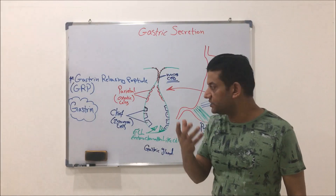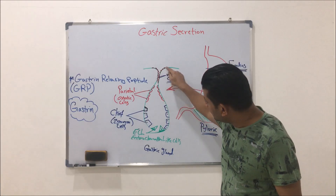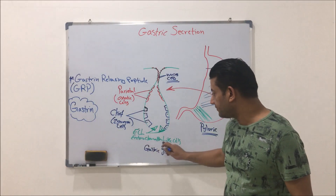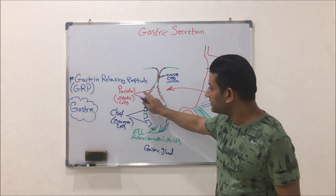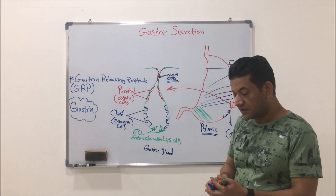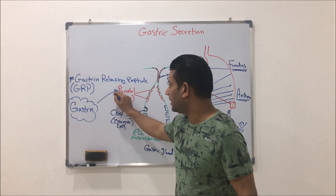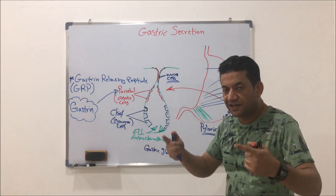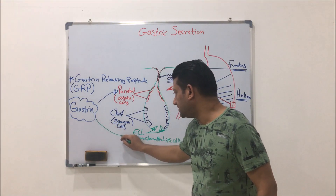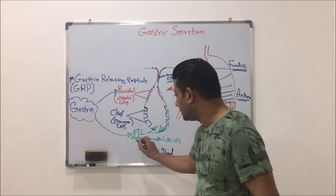Gastrin, being a hormone, circulates in the blood and targets specific cells in the gastric glands. Specifically, gastrin targets the ECL — enterochromaffin-like cells — and the parietal cells. Gastrin has a direct effect on parietal cells causing them to secrete HCl and intrinsic factor, and also acts on ECL cells causing them to secrete histamine.